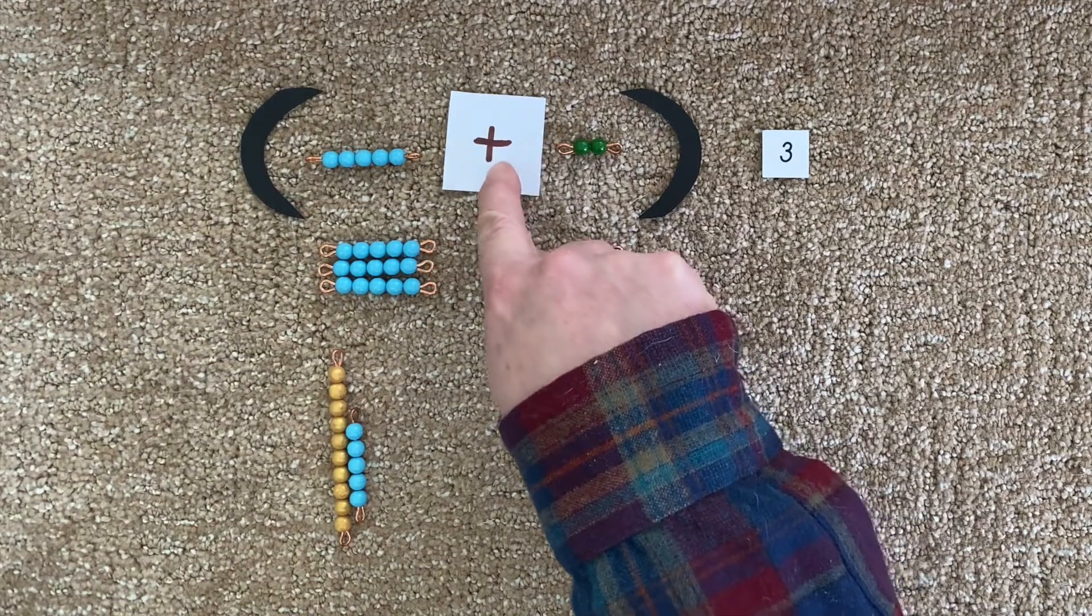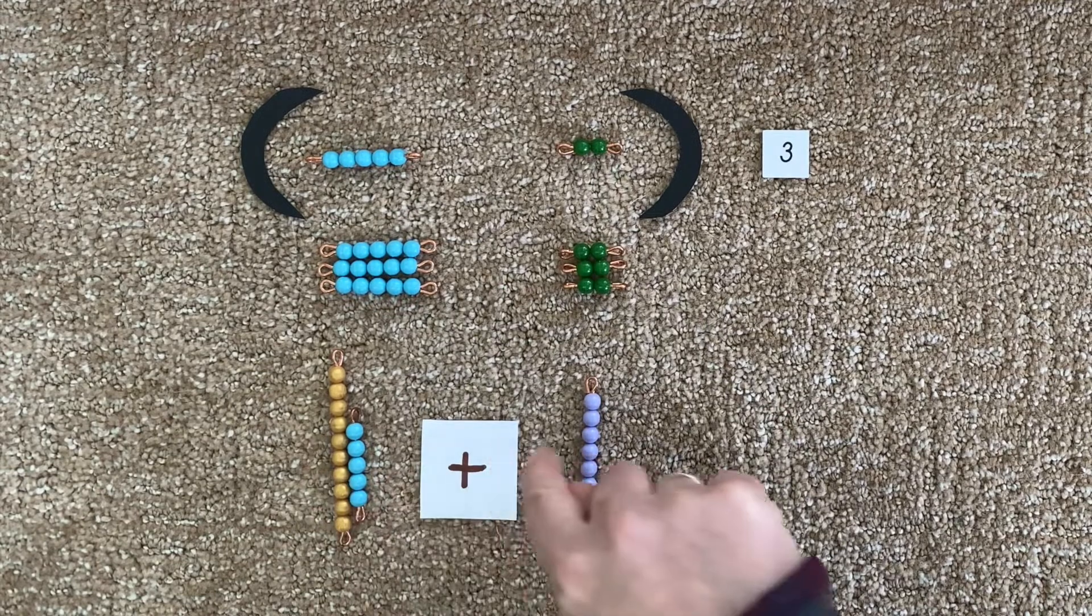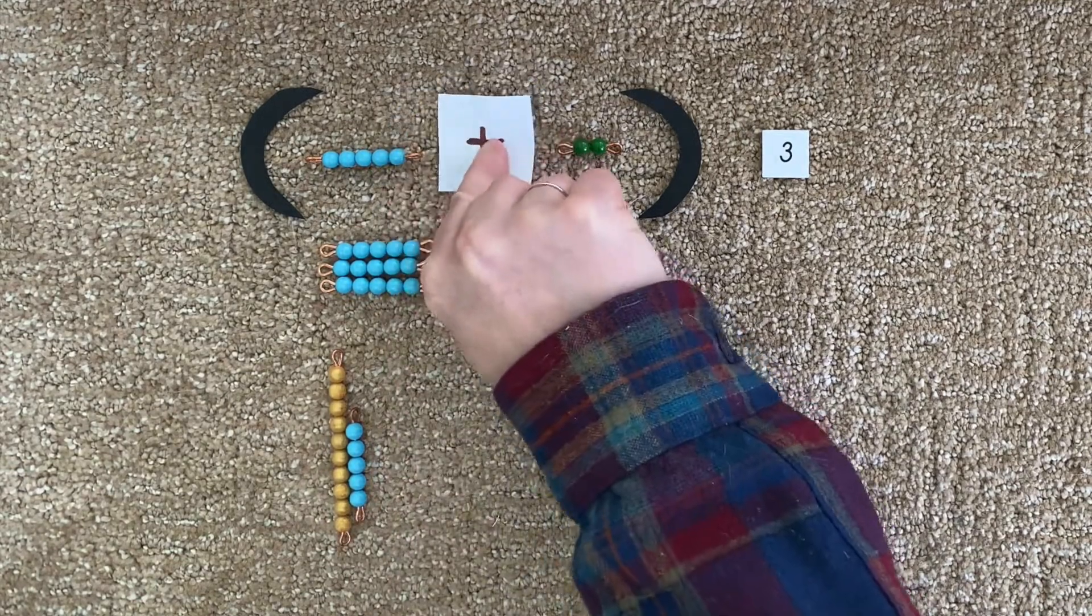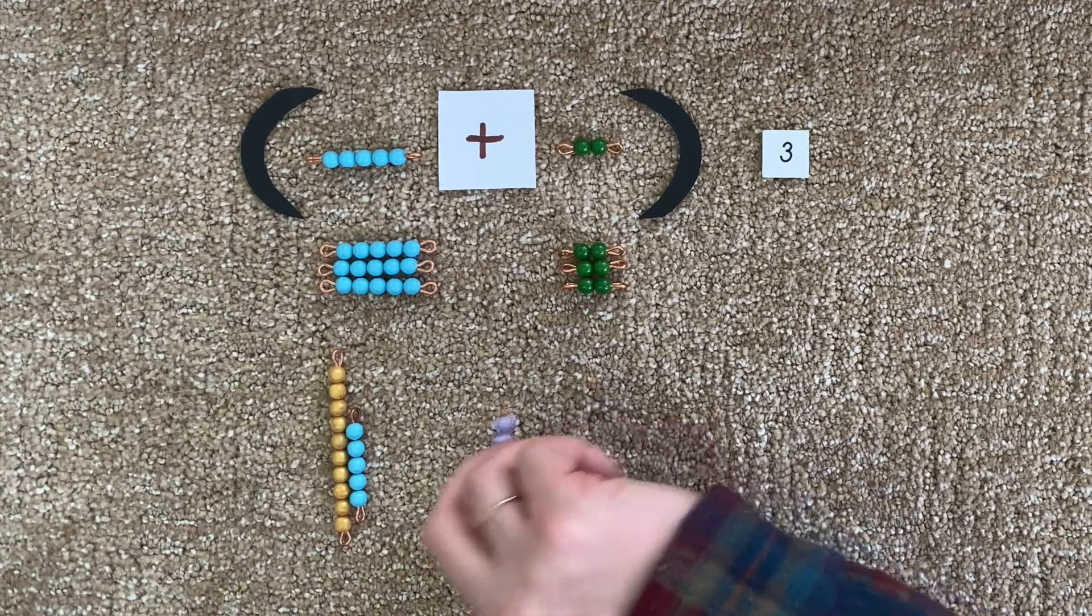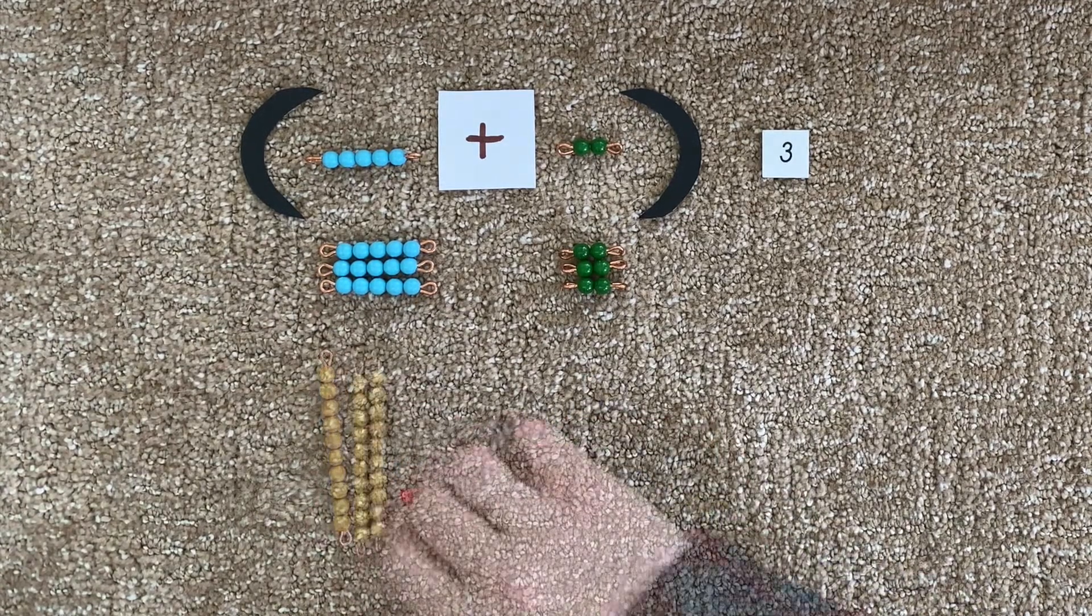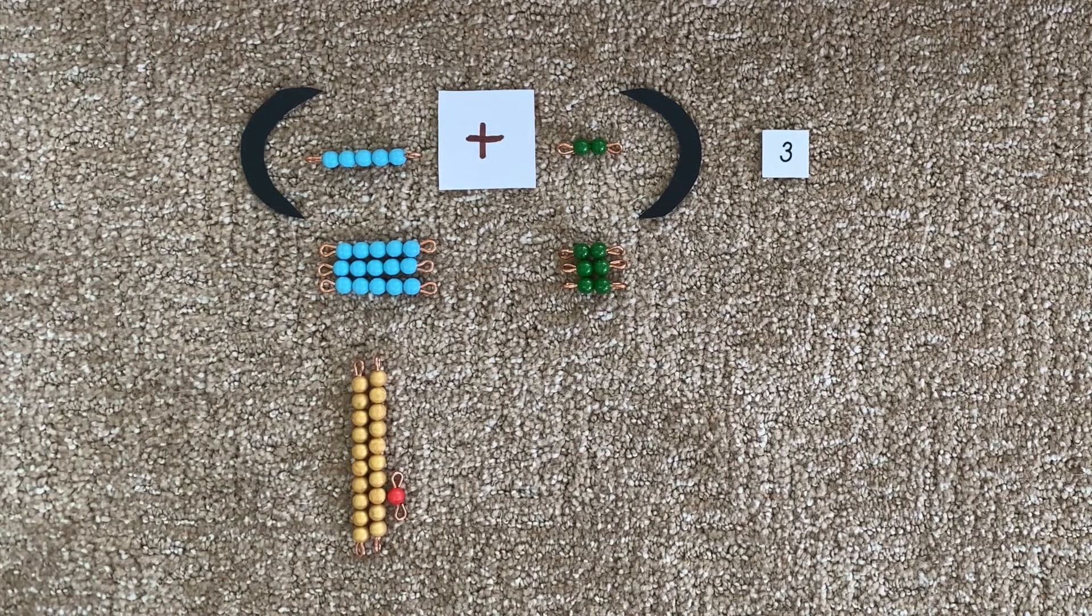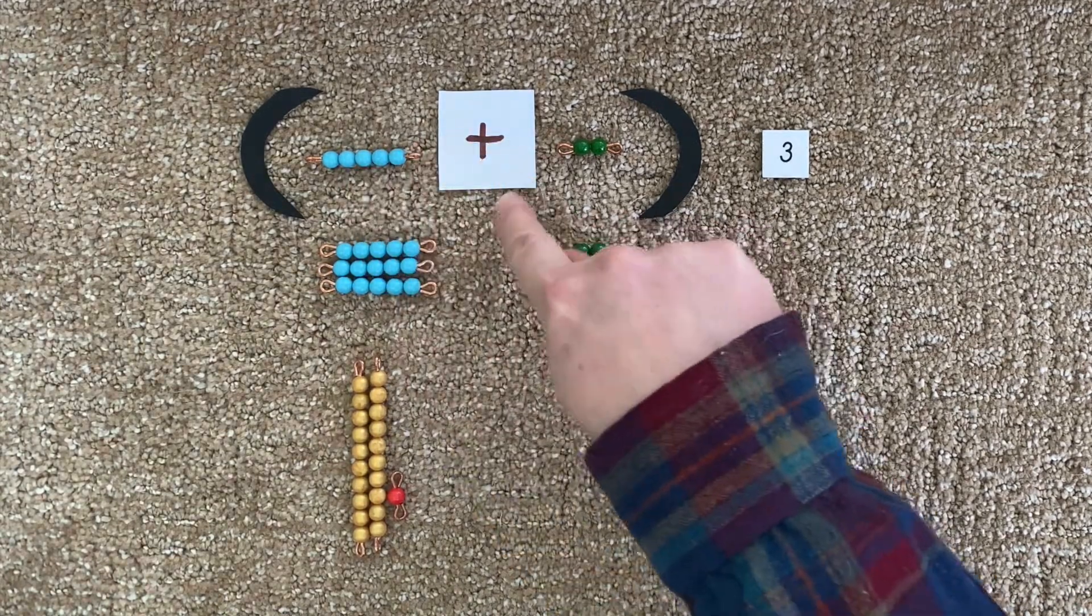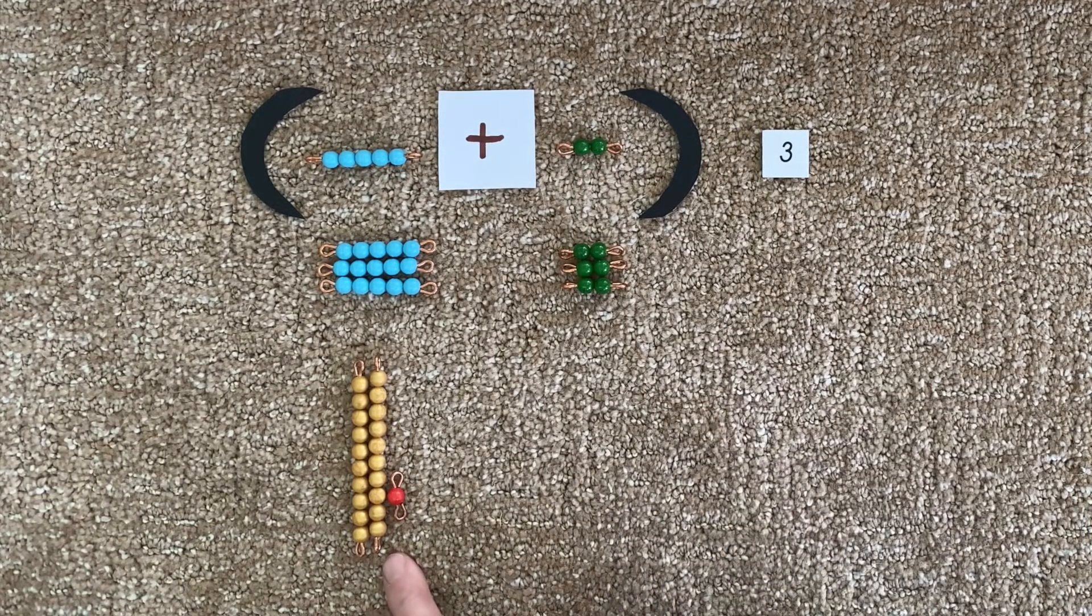Our symbol for addition is right here. So let's add these together. And what do we get when we put these together? We get 21. So now we know that five plus two taken three times is equal to 21.